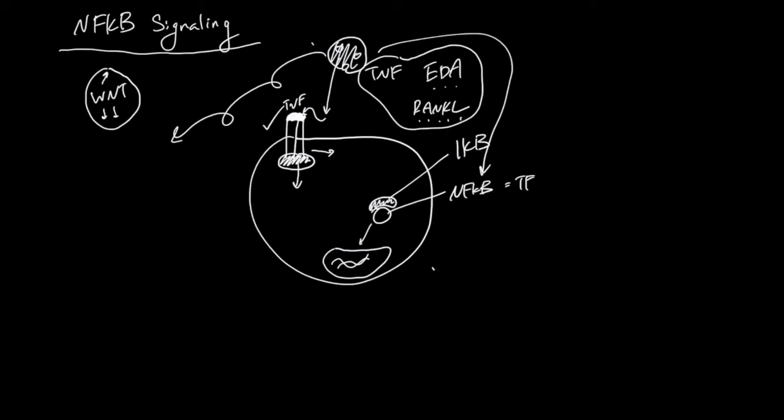So, ligands travel long distance. Some special cells have the receptors for the ligands. Upon binding, special proteins help propagate the signal. And eventually, the signal is going to activate a protein called IKK.